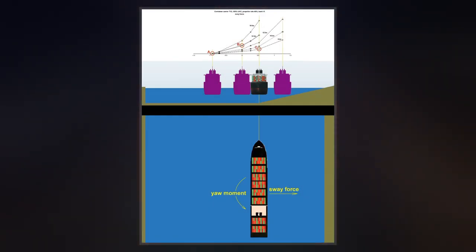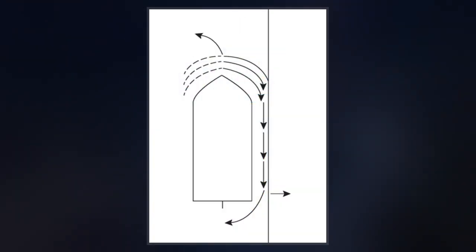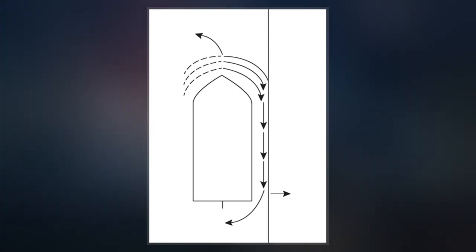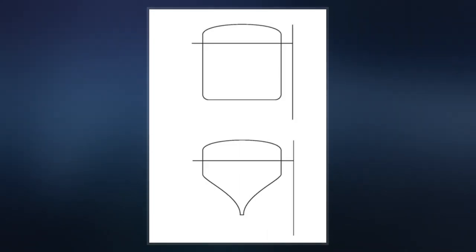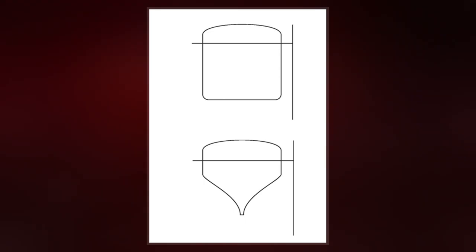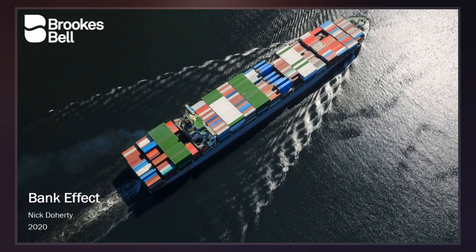The asymmetric flow around a ship induced by the vicinity of banks causes pressure differences between port and starboard sides. As a result, a lateral force will act on the ship, mostly directed towards the closest bank, as well as a yawing moment pushing her bow towards the center of the waterway.